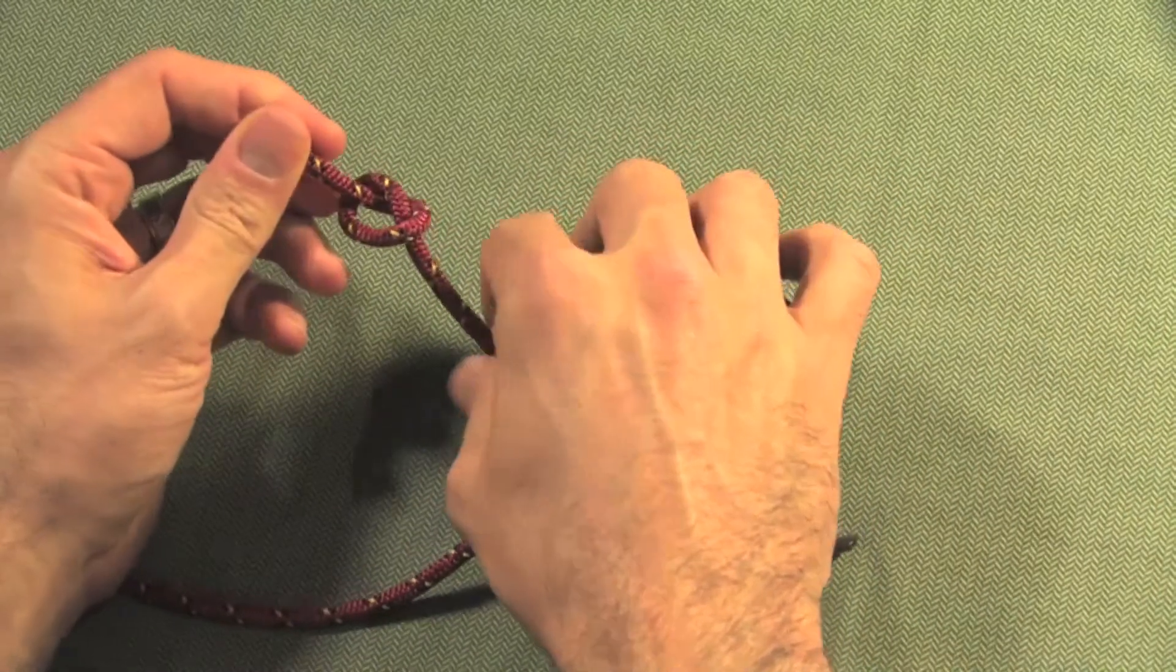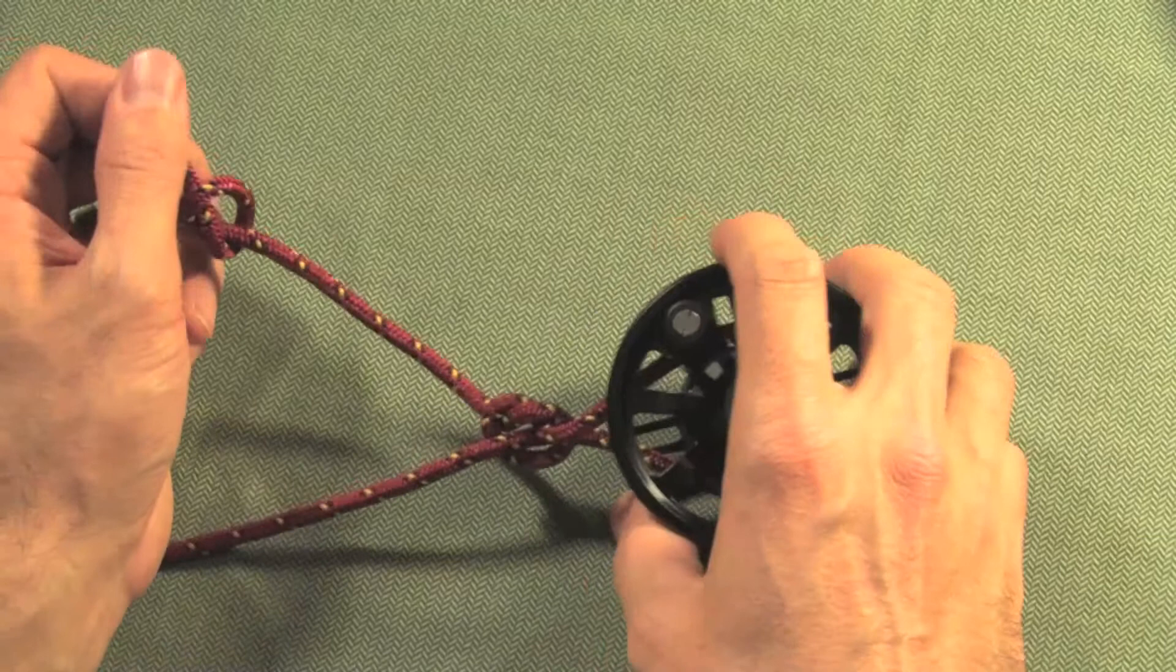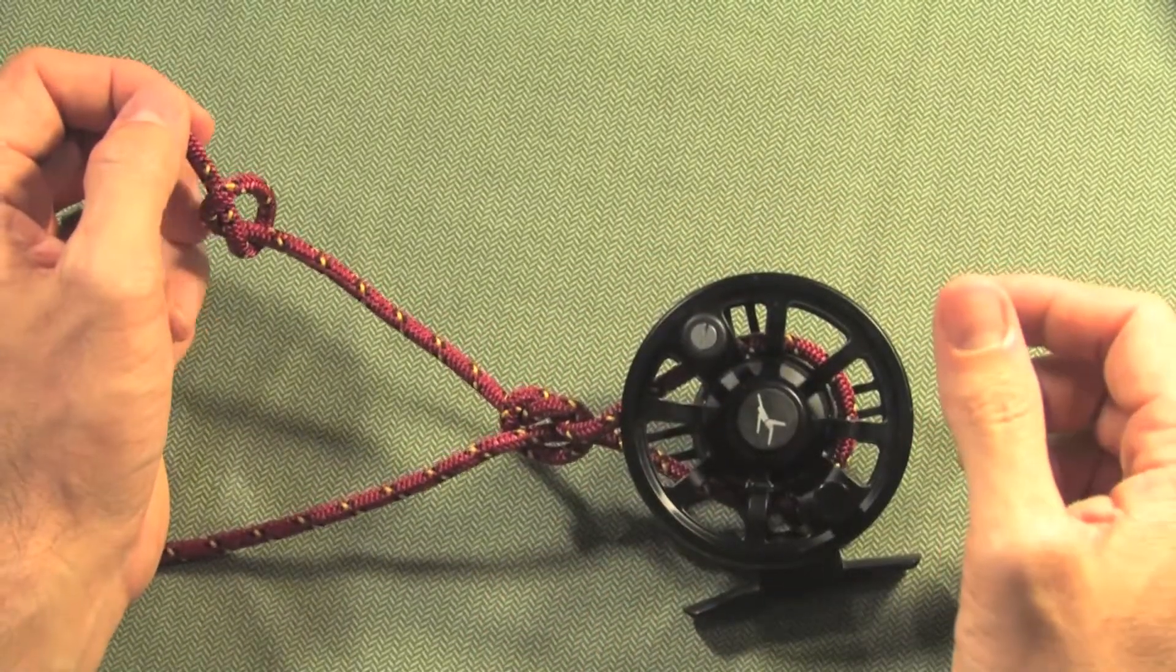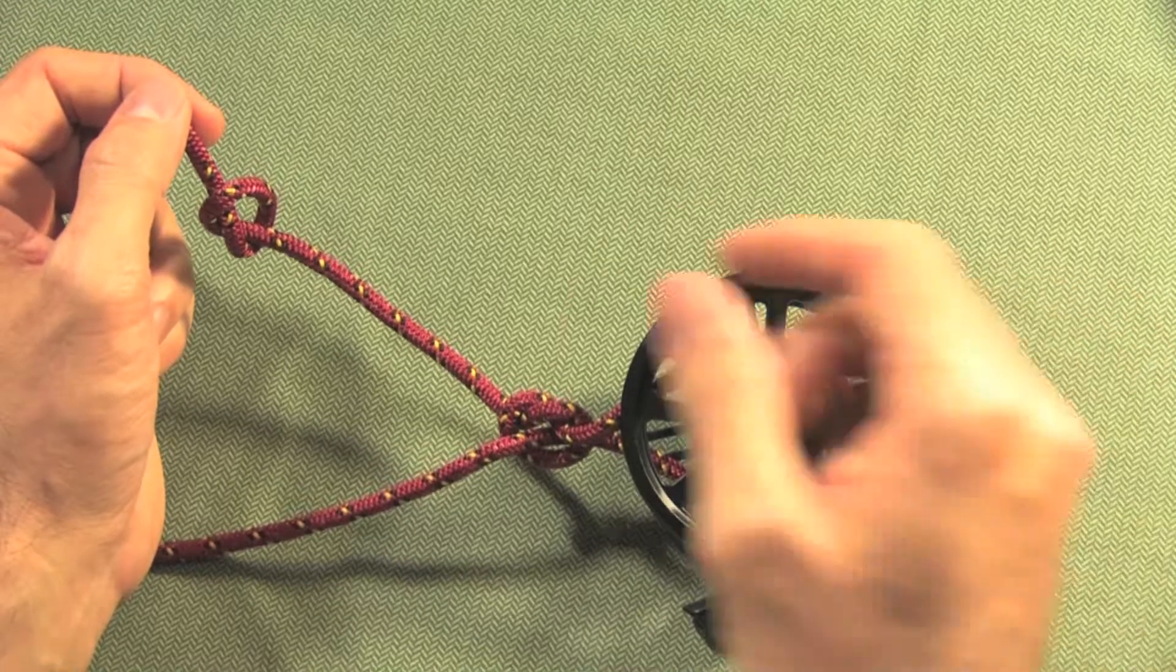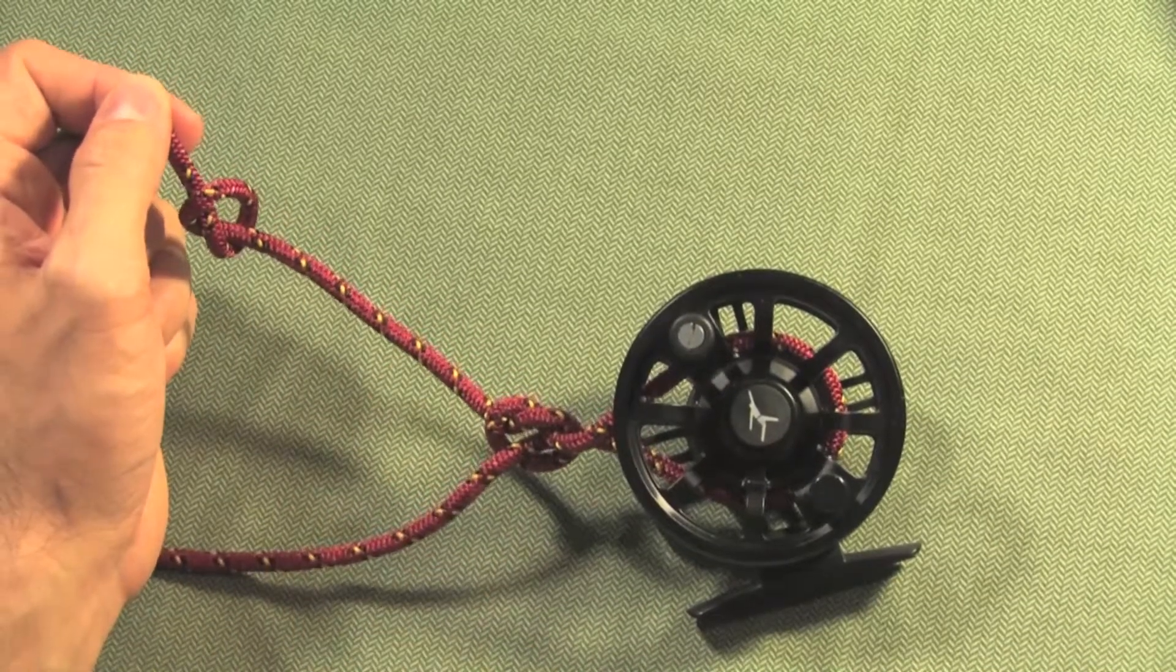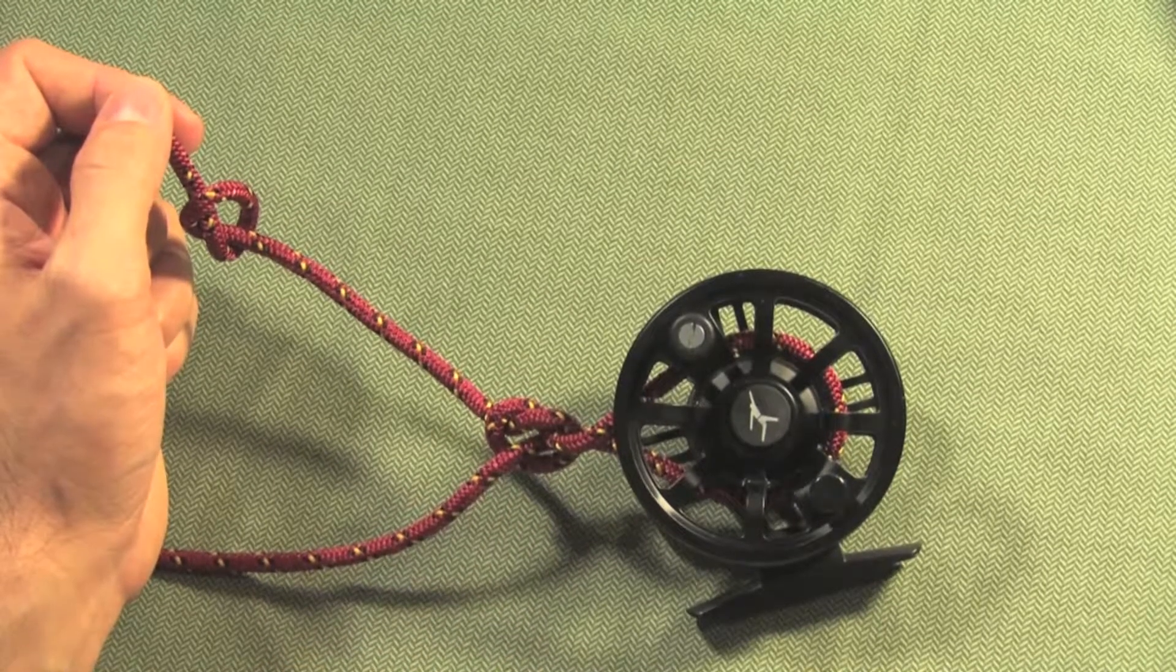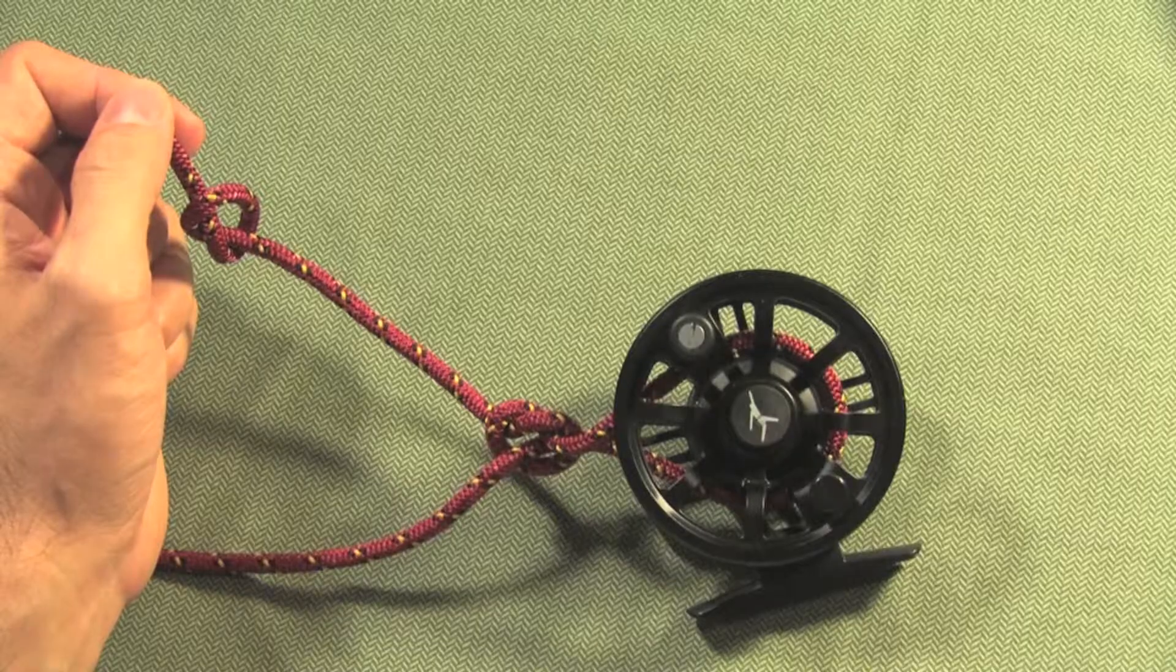And tighten that down a bit. With actual backing, which is very slippery and fine string, when you tighten this down it will cause the upper knot to tighten down onto the lower knot and snug up against the arbor of the fly reel. And you've completed your arbor knot, securing your backing to your fly reel at that point.